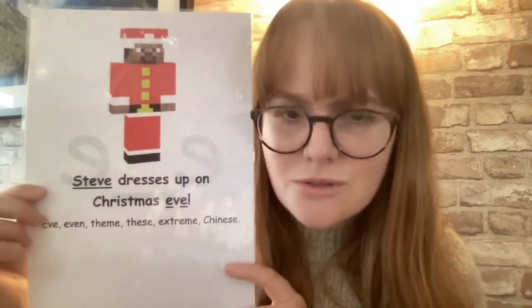Let's turn it over and find out what our card says on the back. Oh, I can see it looks like a Lego man and he looks like he's wearing a Father Christmas suit. The rhyme is Steve dresses up on Christmas Eve. Can you say that for me? It's a bit of a long one today isn't it. Let's turn it over and do it all together. E, Steve dresses up on Christmas Eve, e.